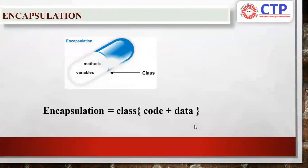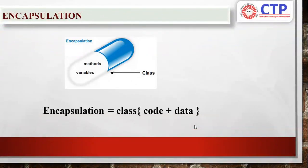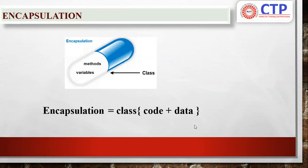Now, encapsulation. Here is a simple formula: Encapsulation equals code plus data. You combine this code and data into a single unit — that is called a class. That's it, the definition is over. Encapsulation is encapsulating both code and data into a single unit, and the name of that unit is called a class.